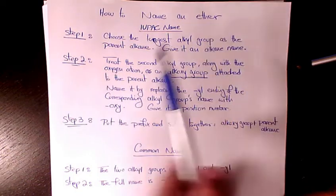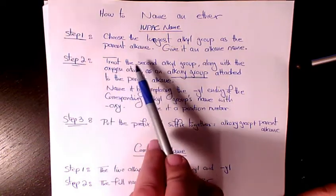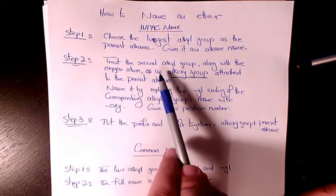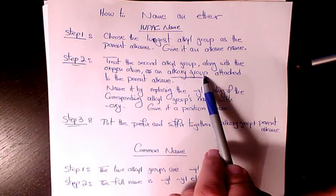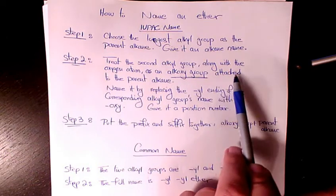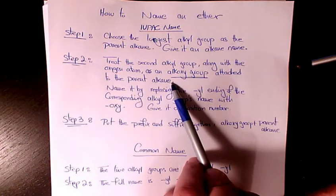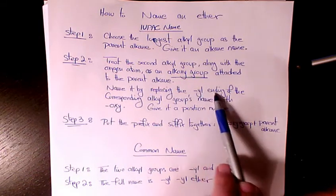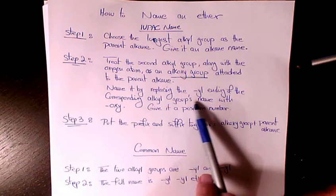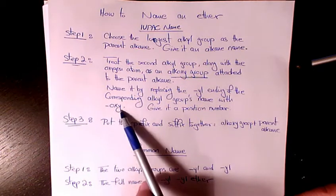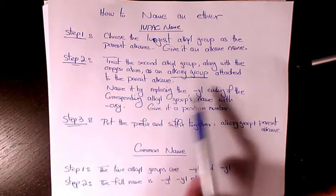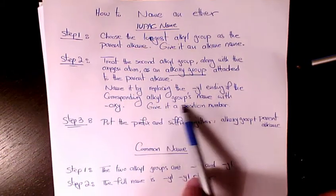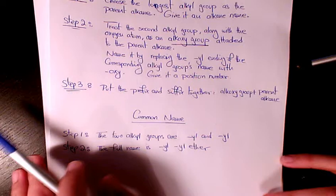In step two, treat the second alkyl group along with the oxygen atom as an alkoxy group attached to the parent alkane. Name it by replacing the yl ending of the corresponding alkyl group's name with oxy. So instead of yl, we call it oxy and give it a position number.